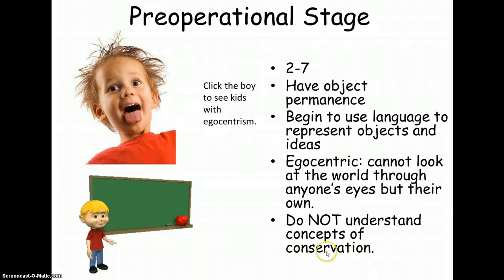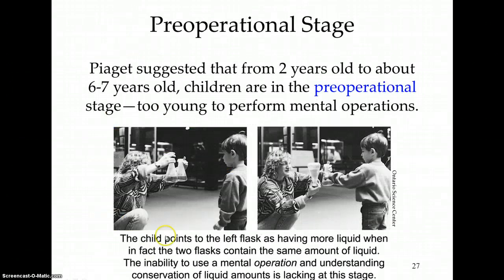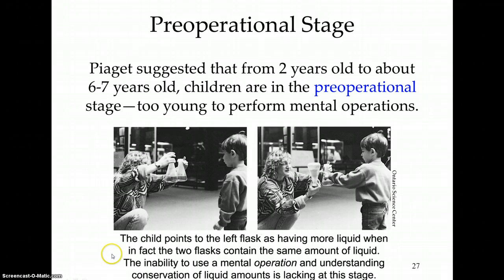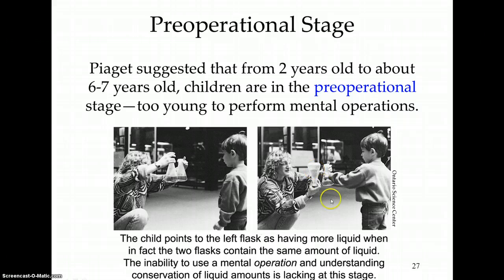Another important concept from this stage is conservation. The researcher shows the child two flasks with equal amounts of water — it's clear to the child they're the same. Then, right in front of the child, the researcher flips one flask so the water level goes higher. The child knows nothing was added, yet when asked which has more liquid, most children in this stage pick the taller flask because the water is higher. This shows an inability to use mental operations to understand conservation of liquid.